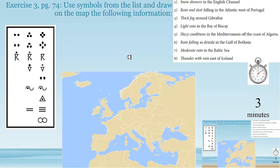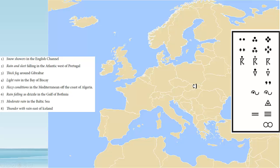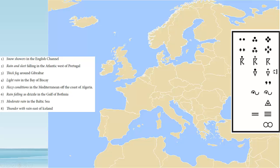Let's take a look at this now. One: snow showers — if you remember, we had rain, snow, and then showers. Rain showers, snow showers — this symbol here. In the English Channel — well, we have the North Sea, and then between France and Great Britain is the English Channel, very narrow. Calais — and yes, there are snow showers.